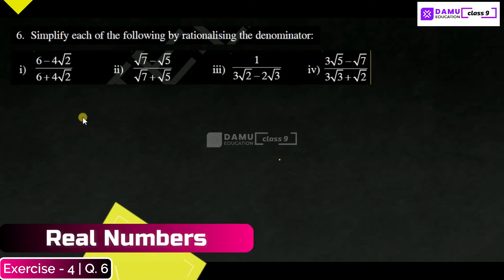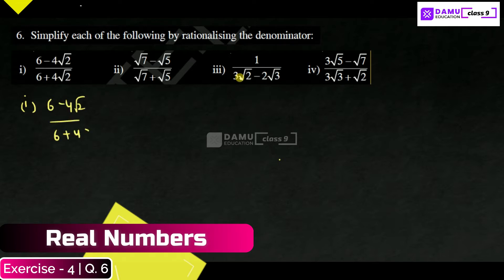In this module, we are going to discuss how to simplify the following by rationalizing the denominators. Our first problem is (6 minus 4 root 2) divided by (6 plus 4 root 2).